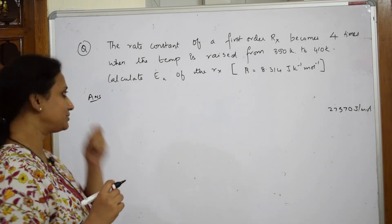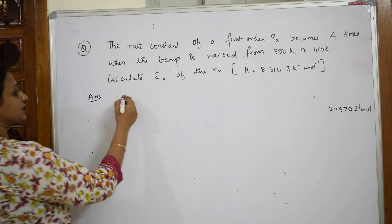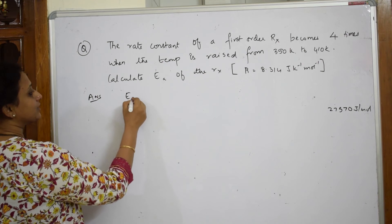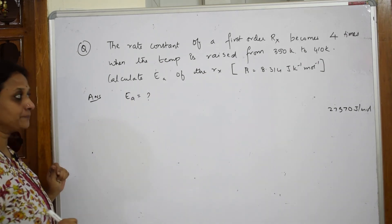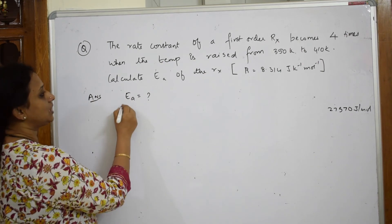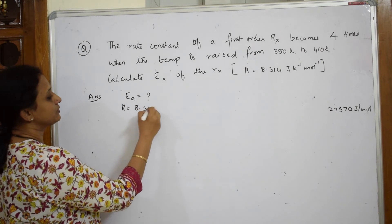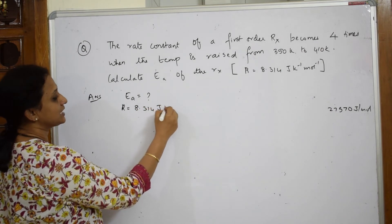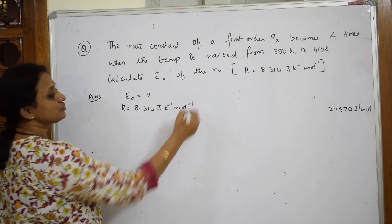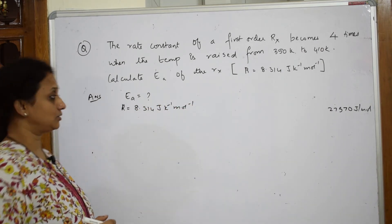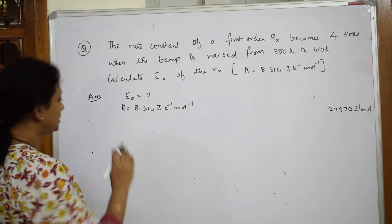The rate constant of the first order reaction becomes four times when the temperature is raised. I have to calculate Ea. The R value given is 8.314. I have to calculate Ea using the Arrhenius equation.